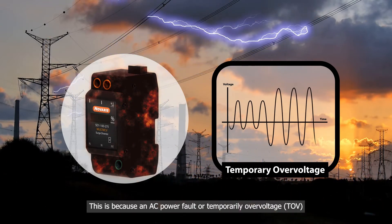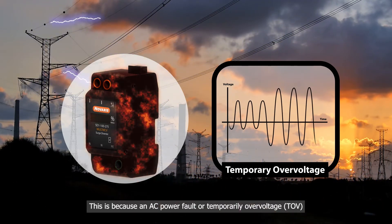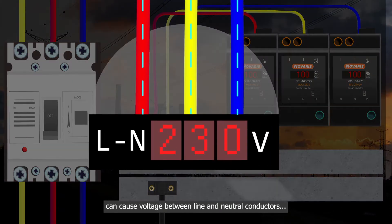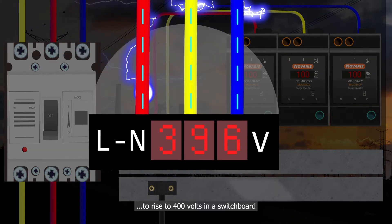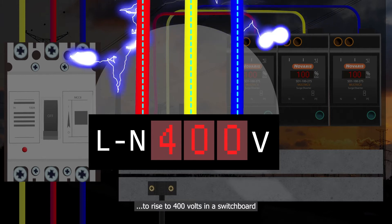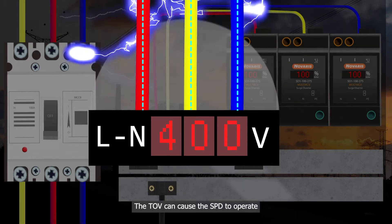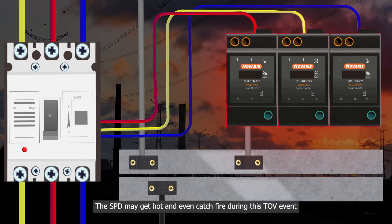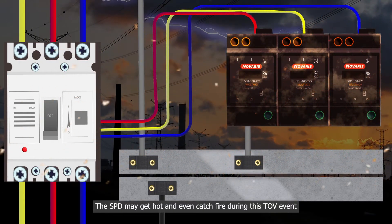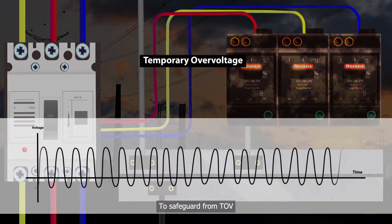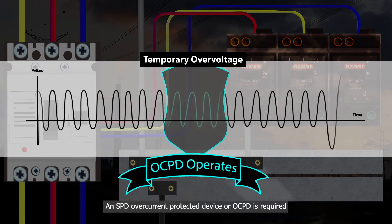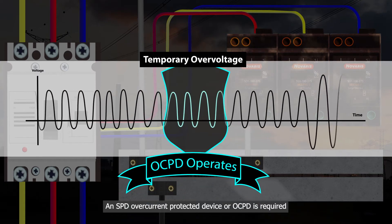This is because an AC power fault or temporary overvoltage can cause voltage between line and neutral conductors to rise to 400 volts in a switchboard. The TOV can cause the SPD to operate, and the SPD may get hot and even catch fire during this TOV event. To safeguard from TOV, an SPD overcurrent protective device, or OCPD, is required.